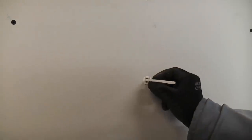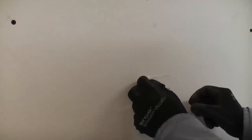Once we've done that, we then just snap off the plastic piece there and we are left with a threaded hole in the plasterboard.